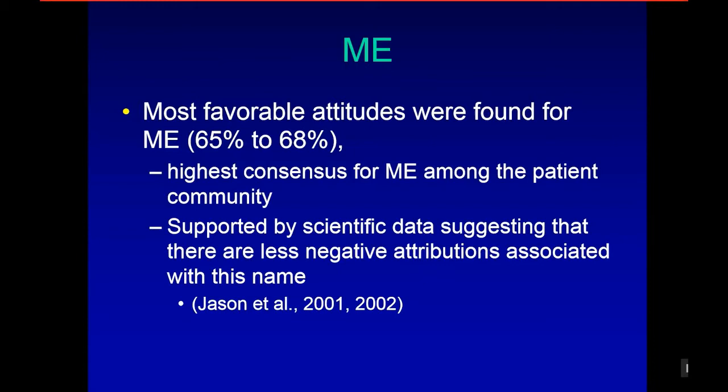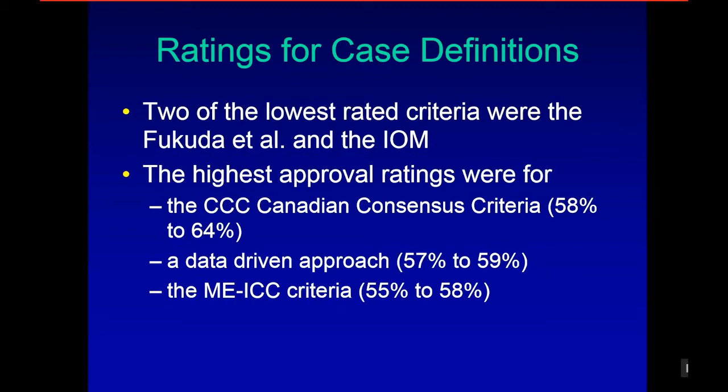It's also supported by scientific data suggesting there are fewer negative attributions associated with ME. Two of the lowest-rated criteria were for Fukuda and the IOM. The next highest approval ratings were for the Canadian Consensus Criteria at 58 to 64%, a data-driven approach at 57 to 59%, and the ME ICC at 55 to 58%. So in terms of what patients would accept, the Canadian criteria was highest, ME ICC was close, and Fukuda and IOM were the lowest.